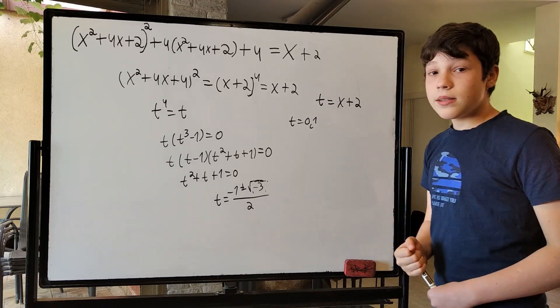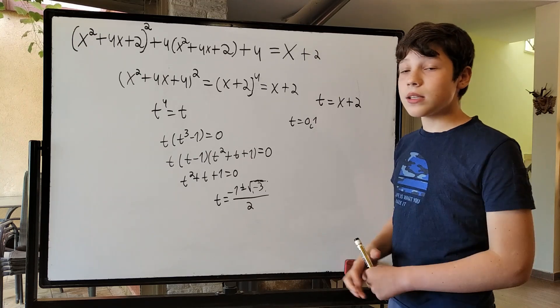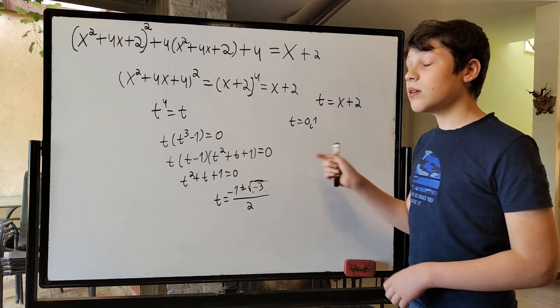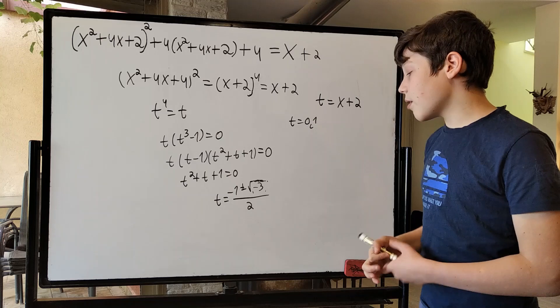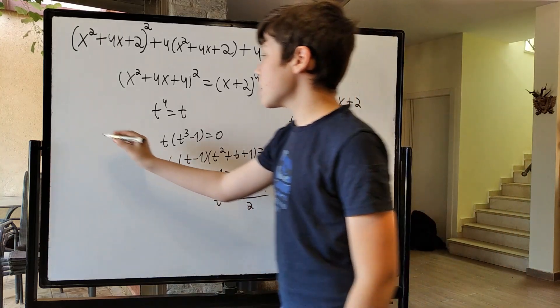But remember, t is not what we're looking for. We're looking for x. Luckily for us, t is x plus 2. So, t minus 2 is x, meaning that all of our solutions to x are, let's write them here, x is...